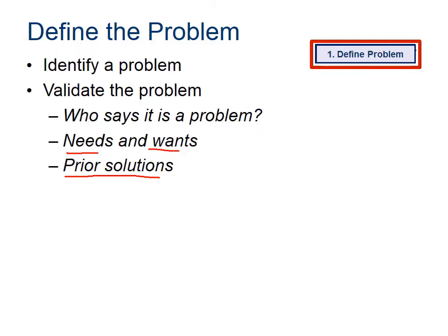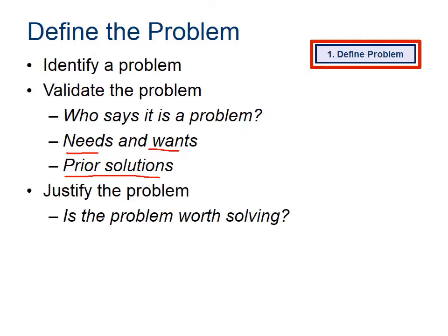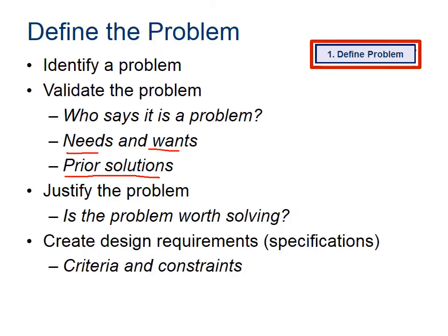Can you go to Walmart or Home Depot and buy that solution? Then you want to ask is it worth solving? We could build a ladder to the moon — we could theoretically build something 250,000 miles long — but is it worth it? Probably not. Finally, you want to look at what exactly do you want it to do. A very important word here is specifications. A specification is really a requirement, and the criteria and constraints are the boundaries. You have to really understand those to define the problem.